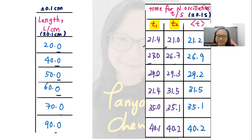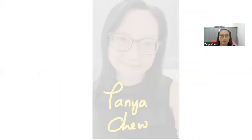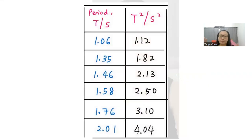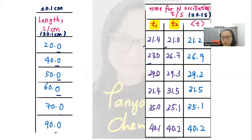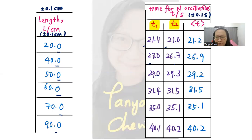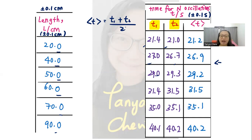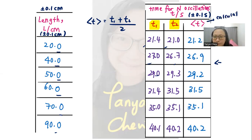Now, period and T average are called calculated data because we use our calculator to calculate them. T average can be calculated as T1 plus T2 divided by 2 — this is the average of the two times measured. Since I use a calculator, this is called calculated data.